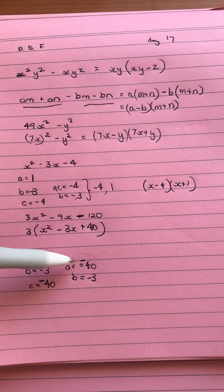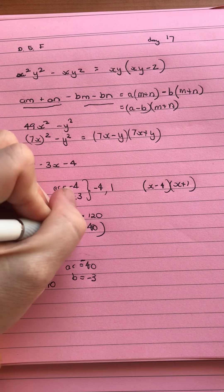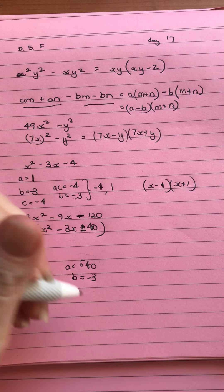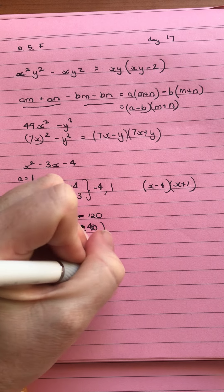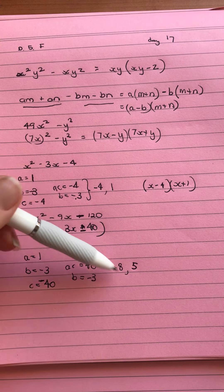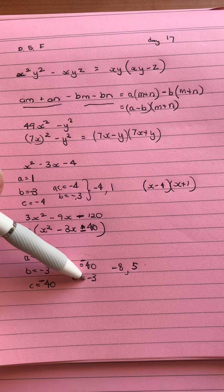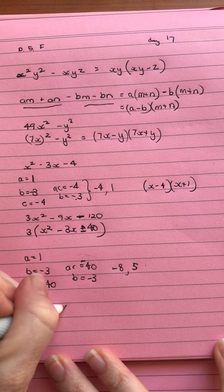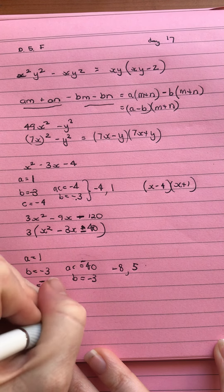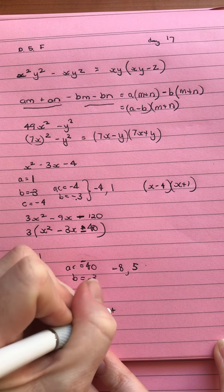So we're looking for something that will multiply to give negative 40, and add to give negative 3. So that means we can use our negative 8 and positive 5. So they will multiply to give negative 40, and add to give negative 3. So then we're able to keep our 3 at the front and put our x take away 8, x plus 5.